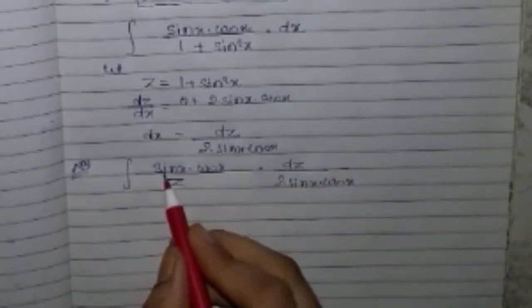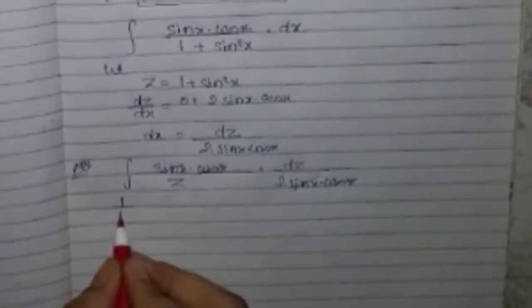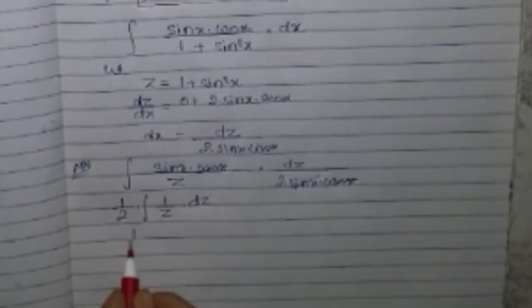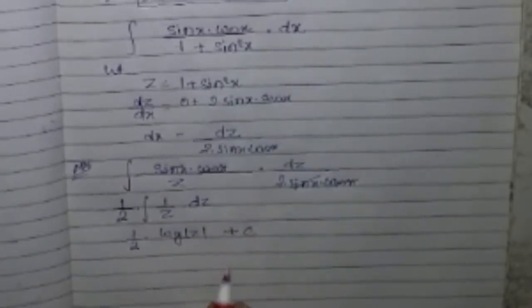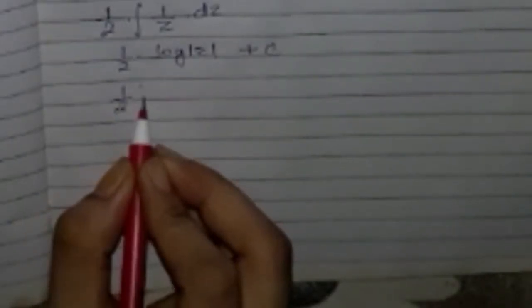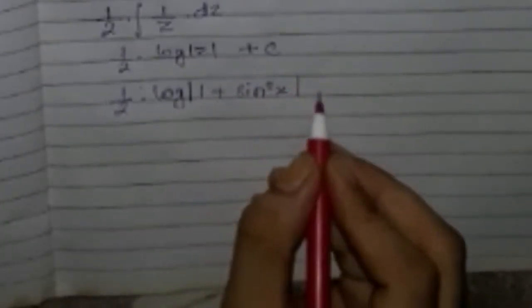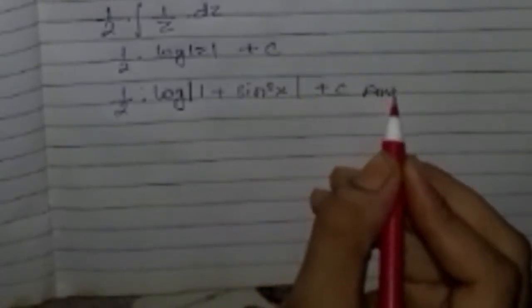sin(x) into cos(x) remove ho jayega. 1/2 constant hai toh yeh bahar aa jayega: 1/2 into integration 1/z dz. Integration of 1/z hota hai log z, toh answer hai 1/2 into log(1 + sin²(x)) + C.